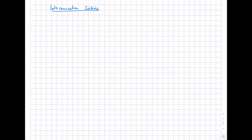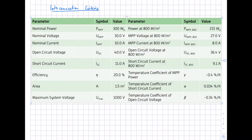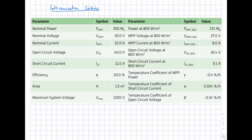First, let's look at a typical datasheet of PV modules. The values you can find on a datasheet are shown here as an example of a monocrystalline PV module. The most important parameters are the nominal power, nominal voltage, and nominal current under standard testing conditions (STC): 1000 watts per square meter irradiance, module temperature of 25°C, and air mass 1.5. Under these conditions, we have an MPP power of 300 watt peak, UMPP of 30 volts, and IMPP of 10 amperes.